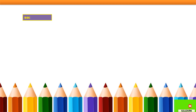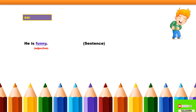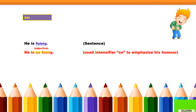Now moving to the next intensifier, that is 'so.' You can see this word used many times in your sentences. The sentence is: 'He is funny.' Here 'funny' is an adjective, so we are going to modify that adjective. After adding the intensifier 'so,' the sentence becomes: 'He is so funny.' I have used 'so' here to emphasize his humor.